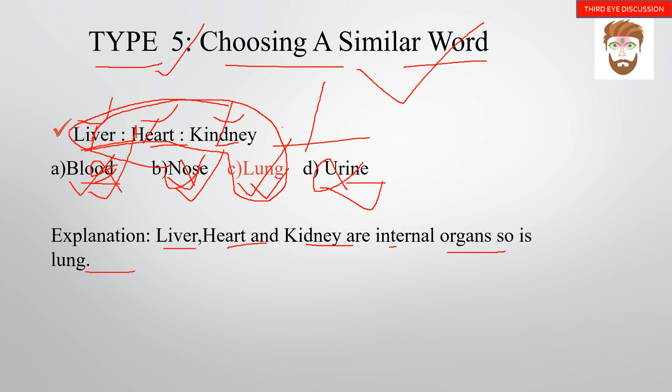There are two main types of analogy: verbal analogy and non-verbal analogy. In verbal analogy, we use language and words. In non-verbal analogy, we use figures or symbols rather than words.